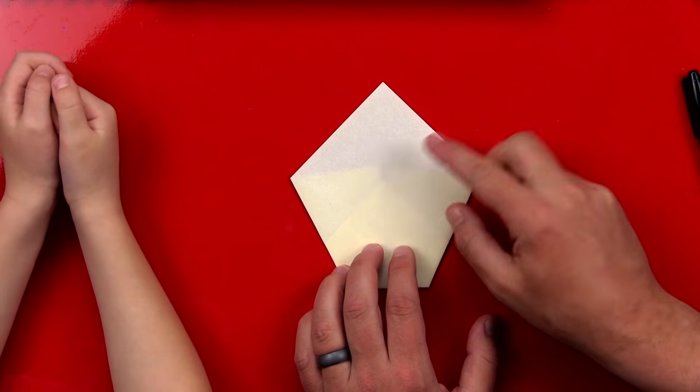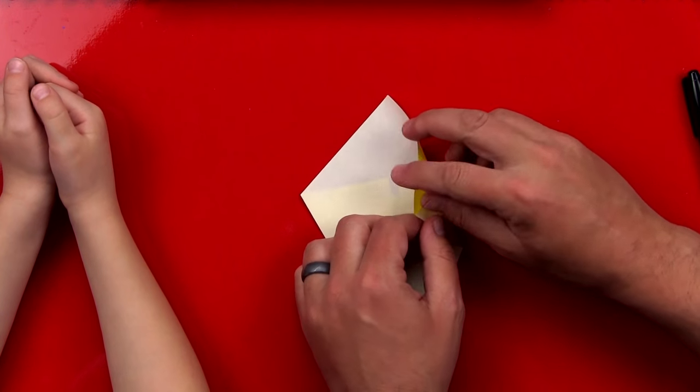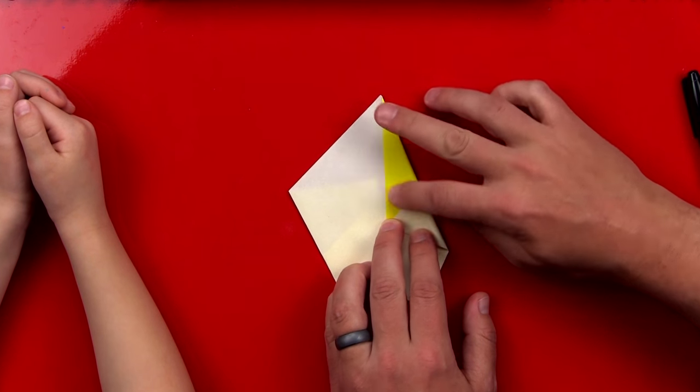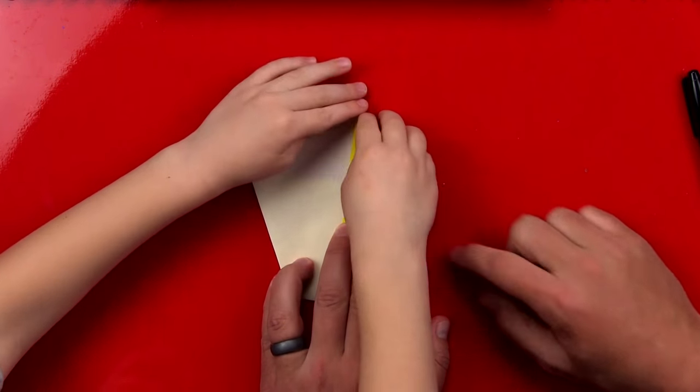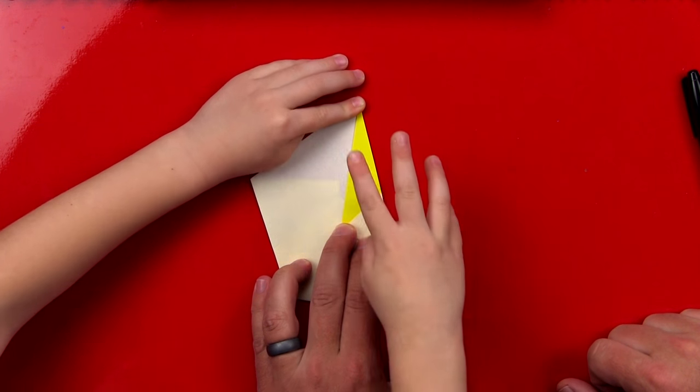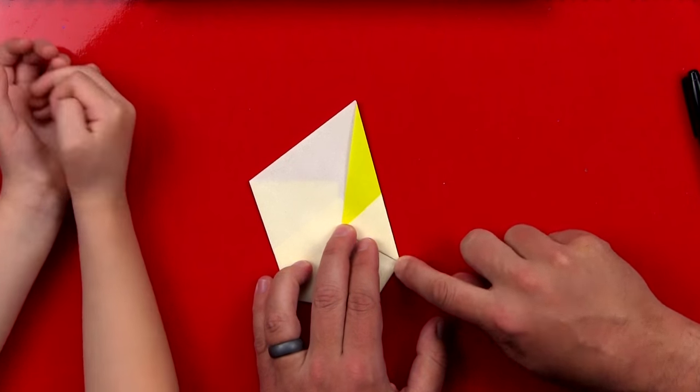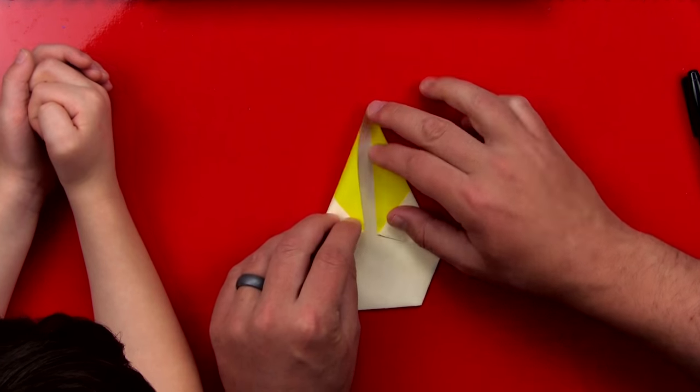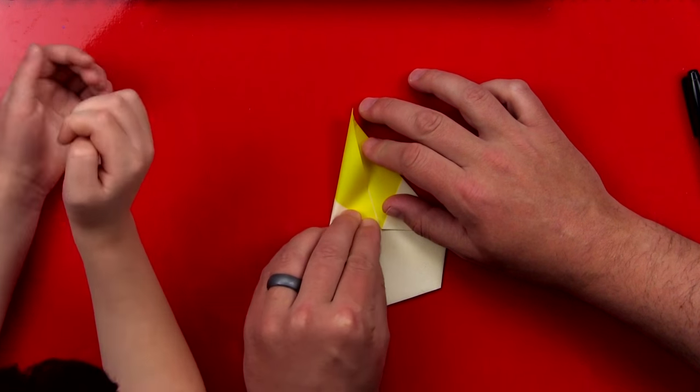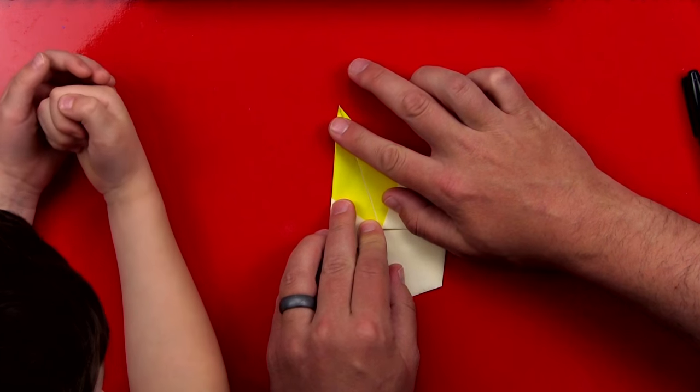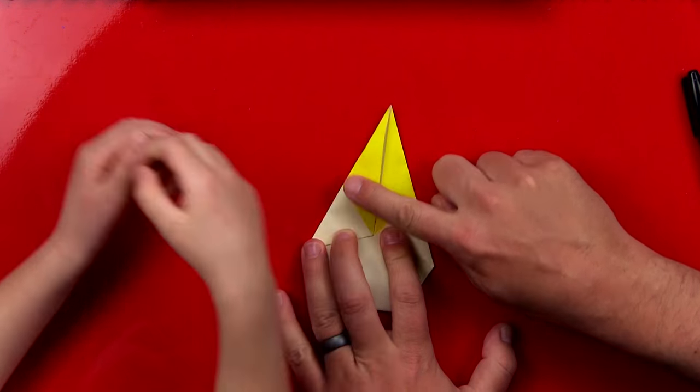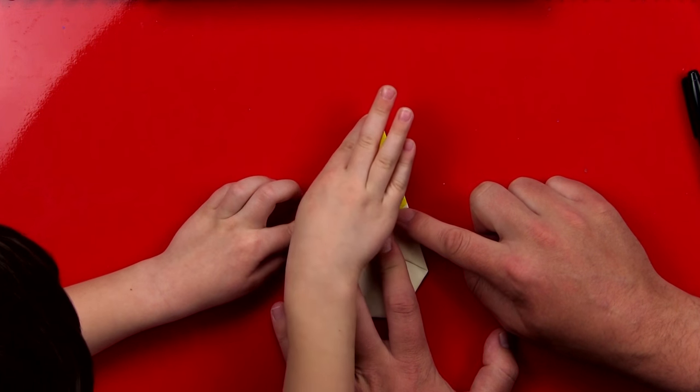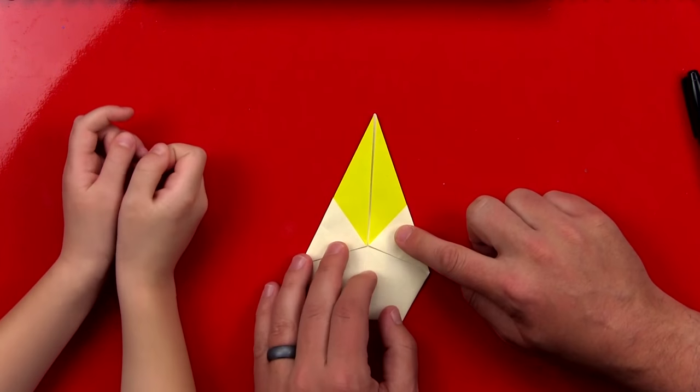And we're gonna fold this edge towards the middle. So fold it down, and we wanna make sure it's a point up at the top. So I'll line it up. Okay, you ready to fold it? Oh! Squeaky fingers! Squeak, squeak! And then we're gonna repeat that same step over here. This edge, we're gonna fold to the middle. Just like that. We wanna make sure we have a point up at the top. Okay, go ahead and finish pressing it down. Nice and crispy! Oh, s'more squeaks!